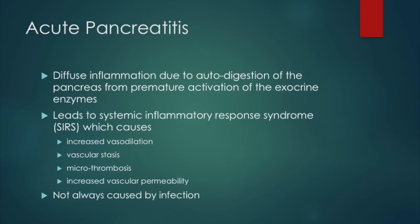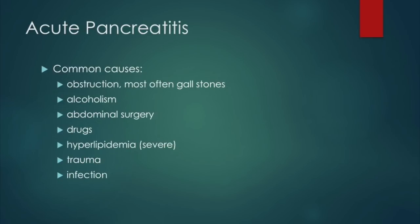Acute pancreatitis is diffuse inflammation due to autodigestion of the pancreas from premature activation of exocrine enzymes. There are two types: edematous and hemorrhagic. Any pancreatitis leads to a systemic inflammatory response causing increased vasodilation, vascular stasis, microthrombosis, and increased vascular permeability. Note that acute pancreatitis is not always caused by infection. Common causes include obstruction (most often gallstones), alcoholism, abdominal surgery, drugs, severe hyperlipidemia (triglycerides 500–1,000), trauma, and infection.